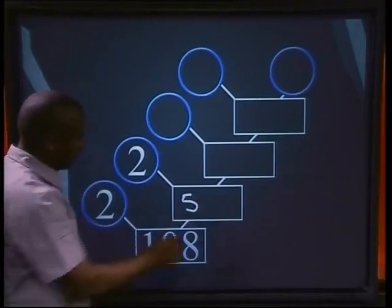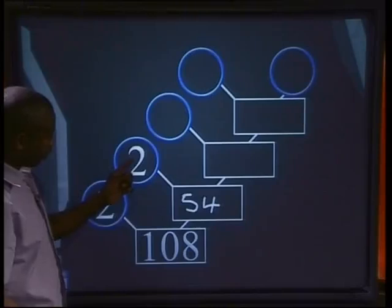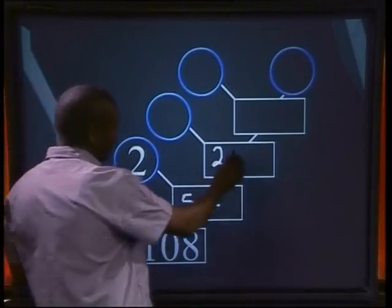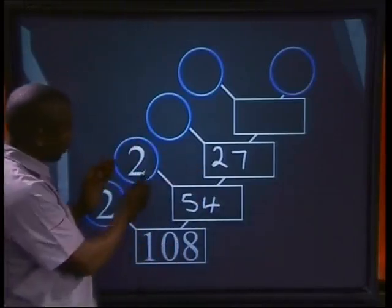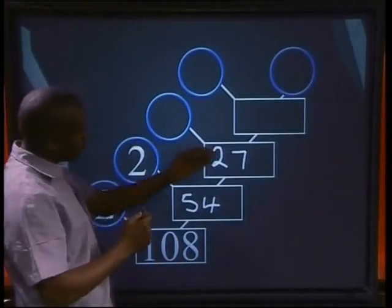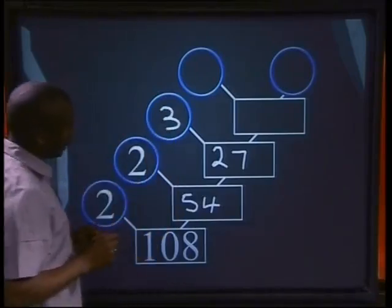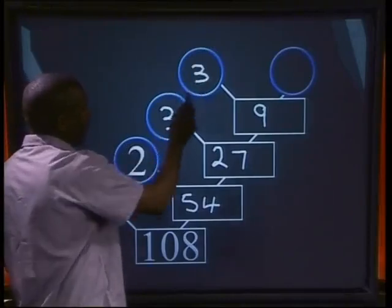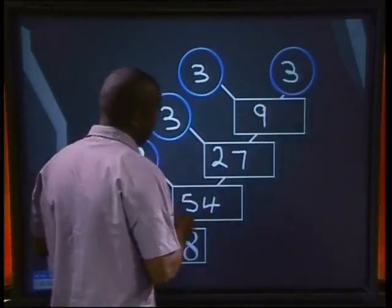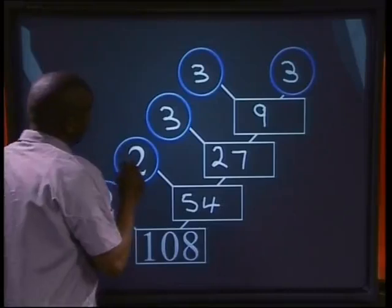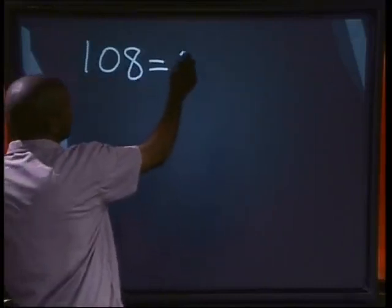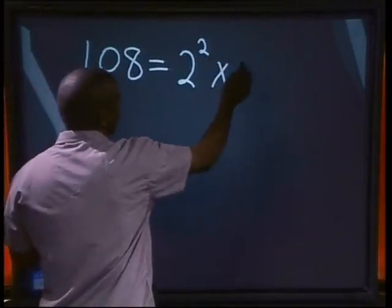2 into 108 goes 54 times. 2 into 54 goes 27 times. Now what number can go into 27? Because 2 cannot go into 27. The next prime number will be 3. Can 3 go into 27? Yes, it goes 9 times. The prime number that can go into 9 is again 3. 3 goes 3 times into 9. Now let's write 108 as a product of its prime numbers: 108 equals 2 times 2 times 3 times 3 times 3. So 108 will be 2 to the power of 2 multiplied by 3 to the power of 3.